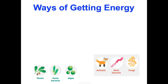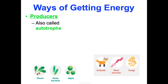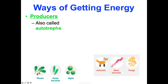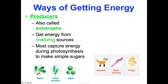There are two overall ways to access energy: you can be a producer or a consumer. Producers are also known as autotrophs. Let's break down this word — auto means self, trophe means nourish. They are self-nourishers. They get their energy from non-living sources like the sun.